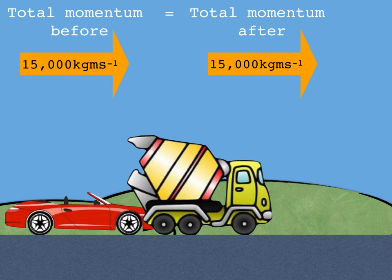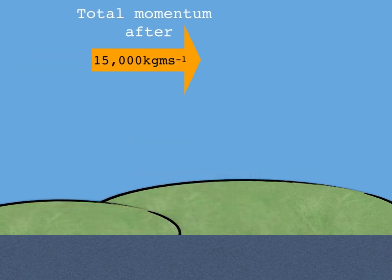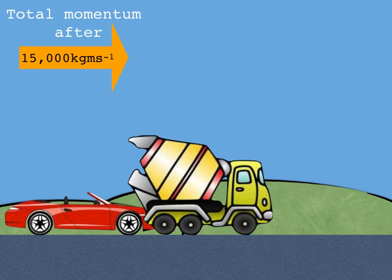So we now need to work out how fast they're going to be moving after the crash. We both know really that they're going to be moving forward slowly, a lot slower than the Porsche was going, but exactly how fast. Well to work that out we need to use the same equation again, the momentum equals mass times velocity equation.